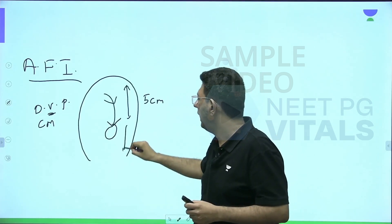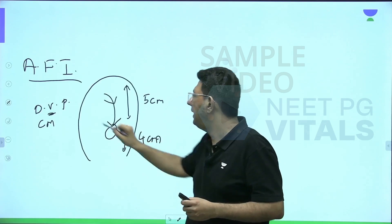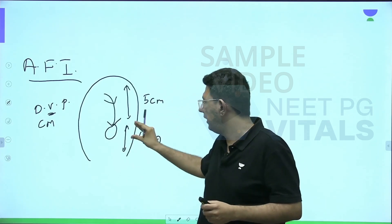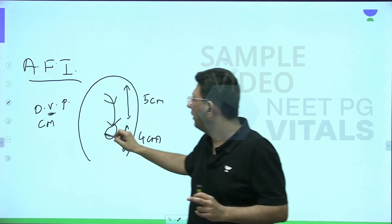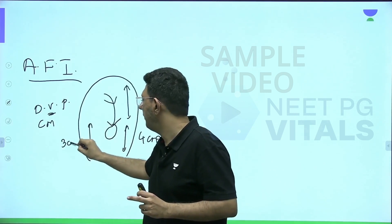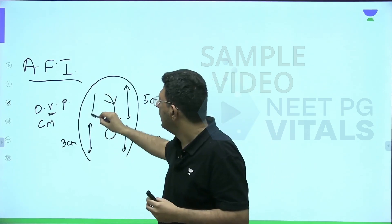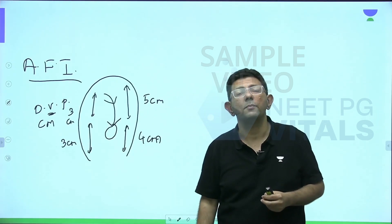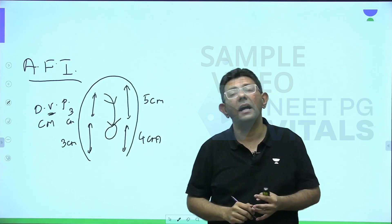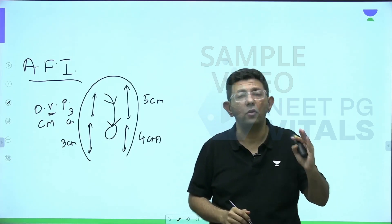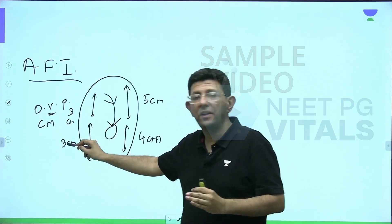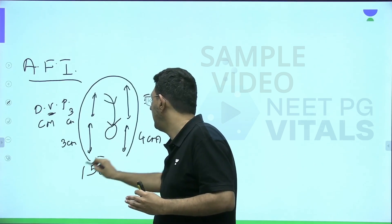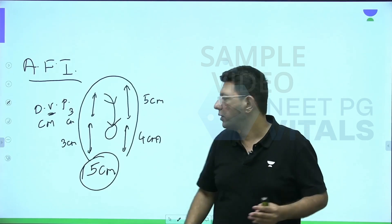By 'deepest,' I mean: if there is one pocket of three and one of four, choose the four. Say I get pockets of five, four, three, and three centimeters across the four quadrants. The amniotic fluid index is the addition of all four values. So three plus three is six, plus four is ten, plus five is fifteen — this patient's AFI is 15 centimeters.